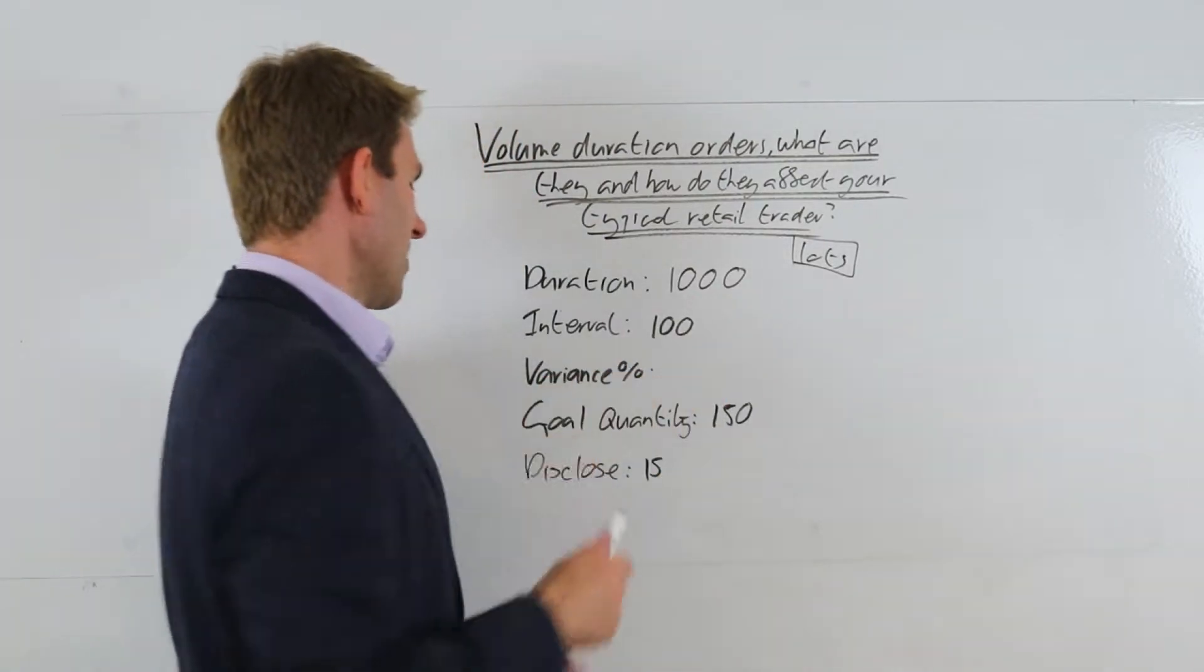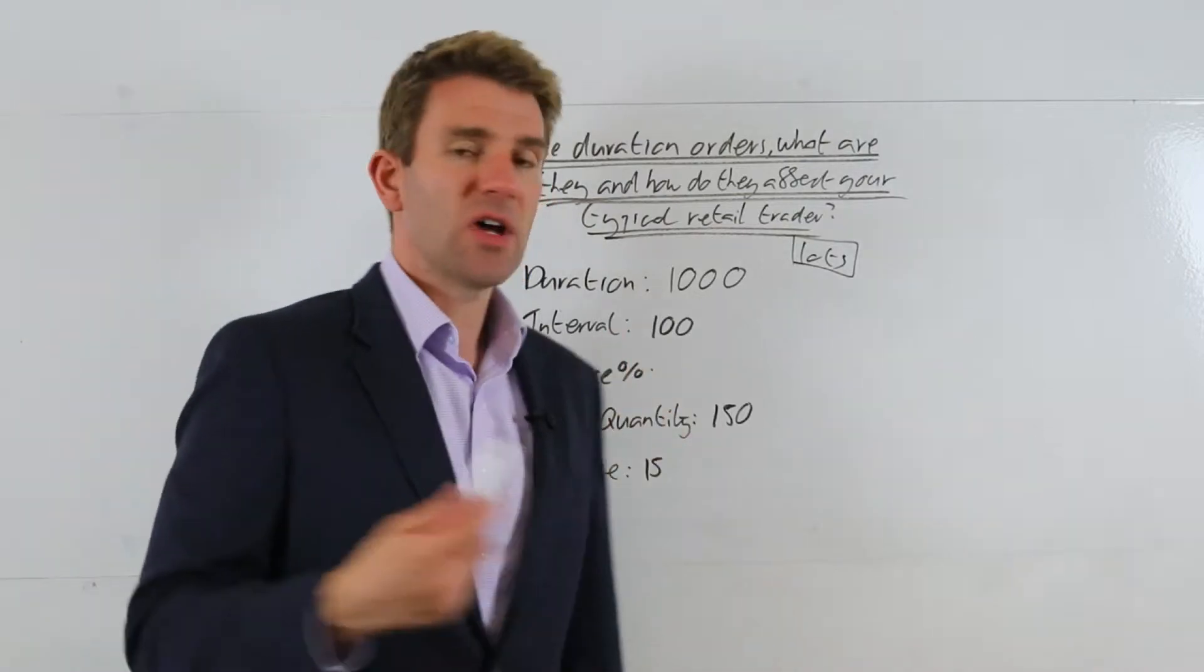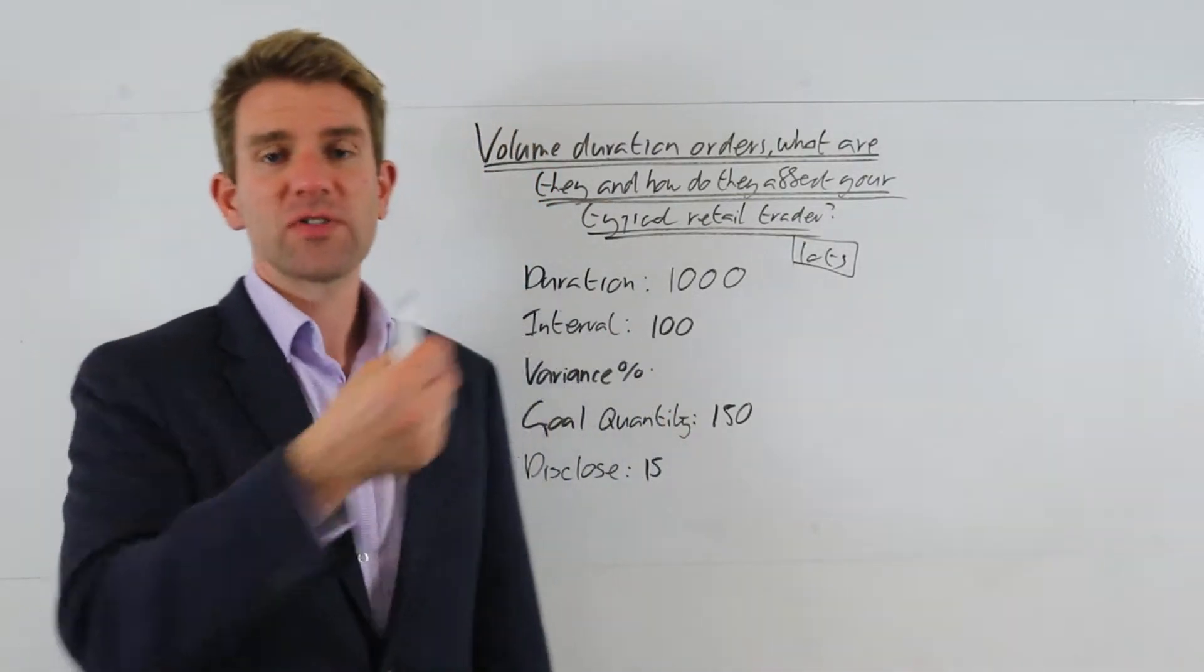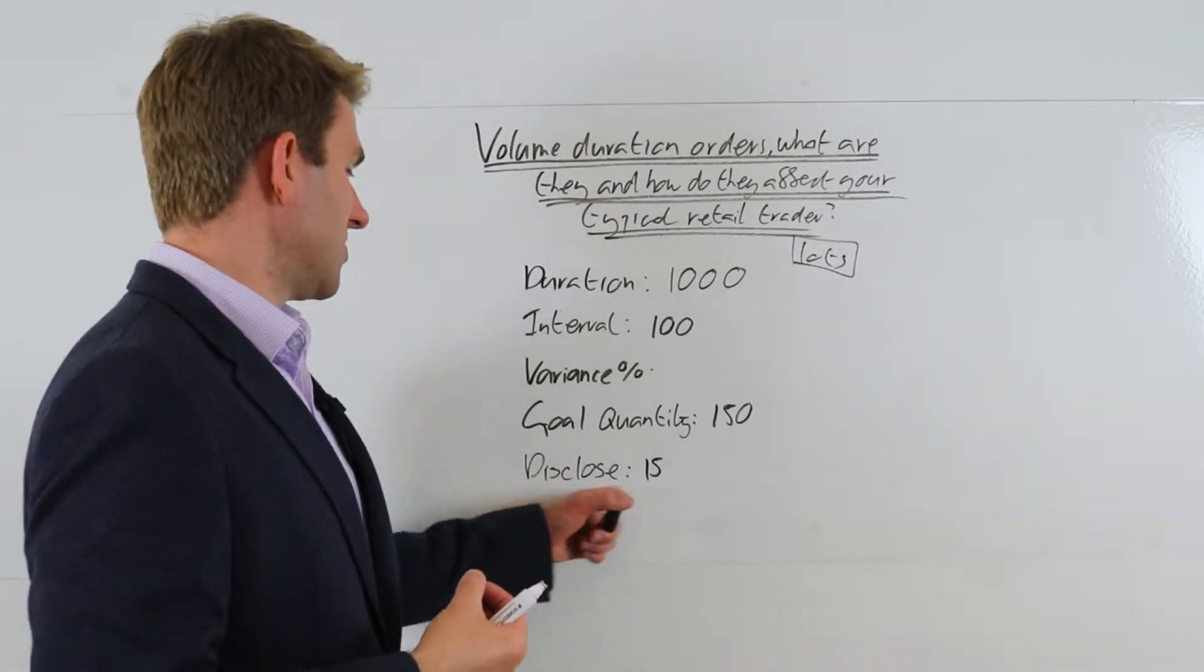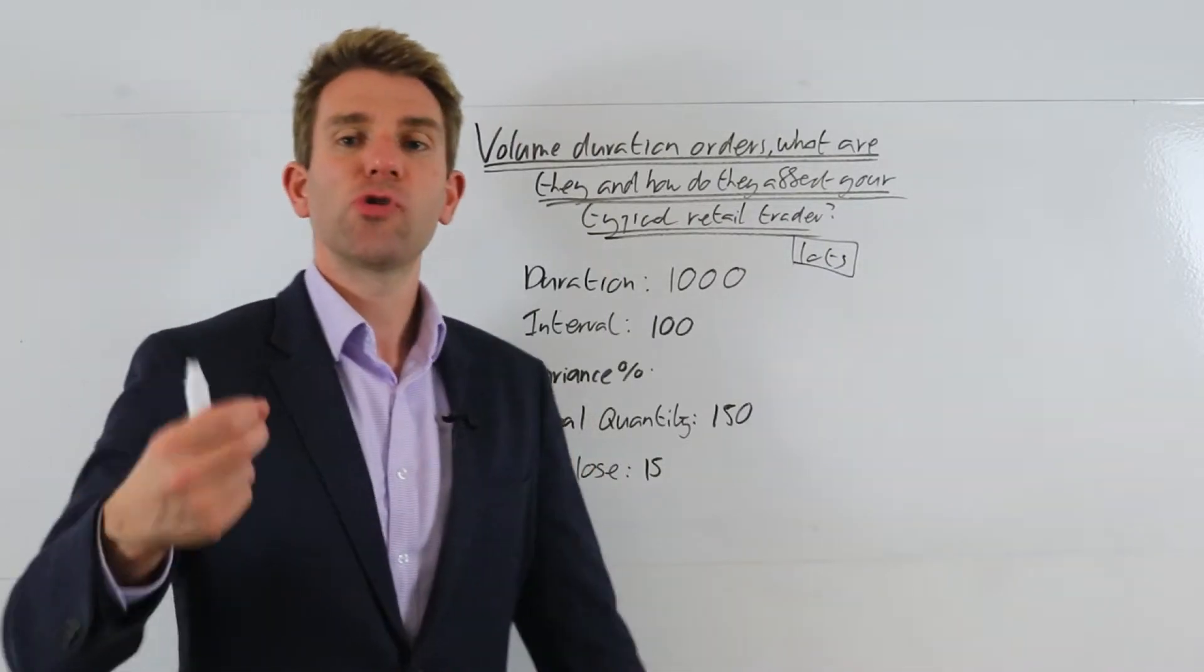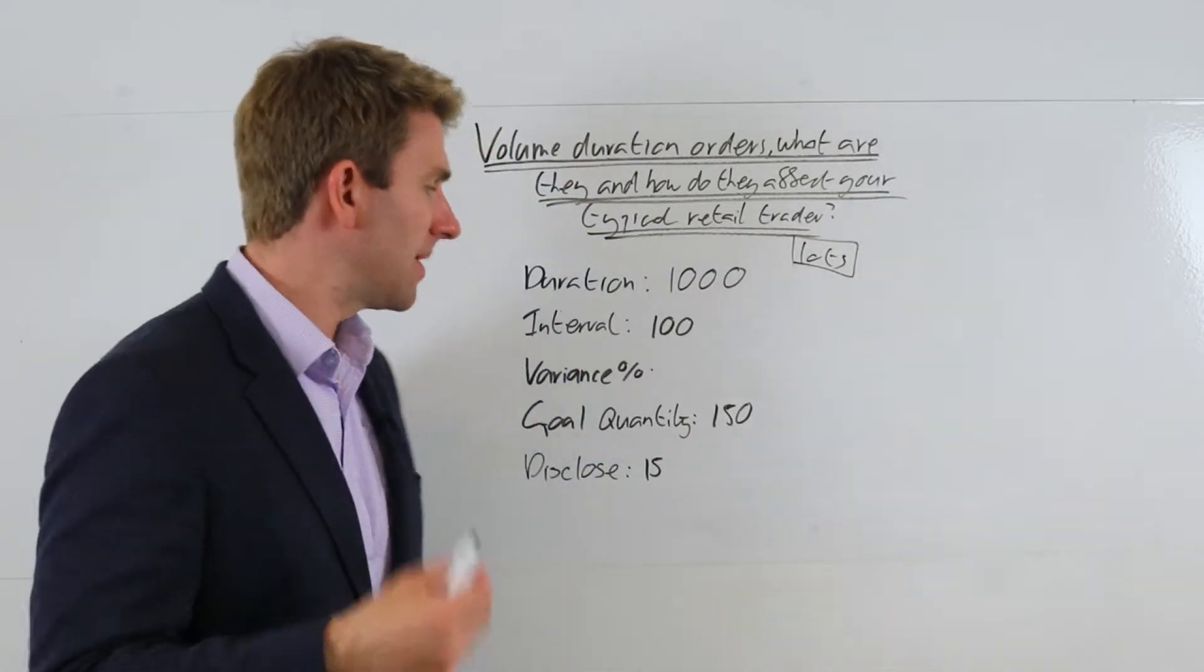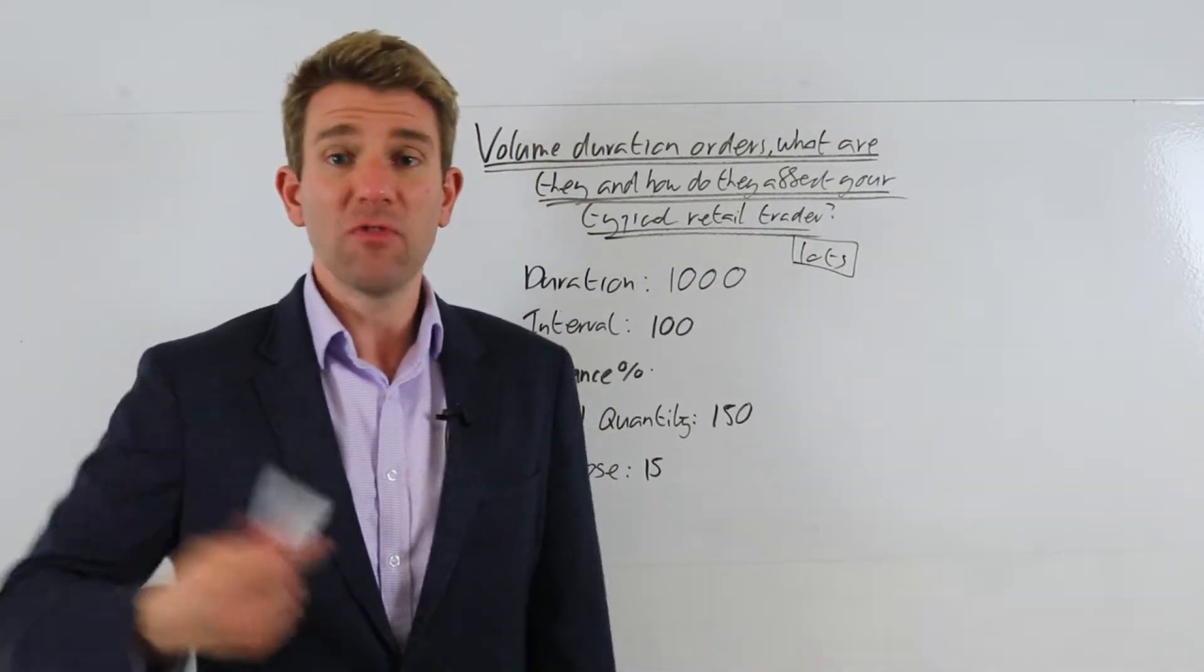So let's move to variance in a moment. Goal quantity is 150. So in this example, we wanted to buy 150 contracts of whatever this may be. And the disclose is how much it will show to the market at any one time, whether it's taking offers or there are working bids, whatever.